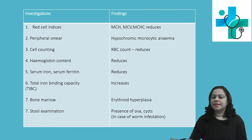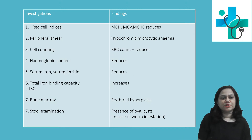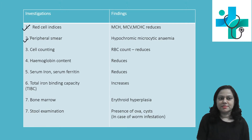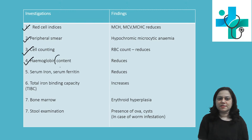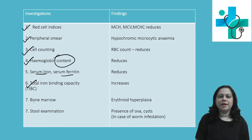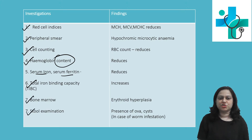If we go through investigations, commonly done investigations to diagnose various types of anemia are: red cell indices, peripheral smear examination, cell counting, hemoglobin content assessment, level of hemoglobin, serum iron and serum ferritin level, total iron binding capacity, bone marrow examination, and stool examination.